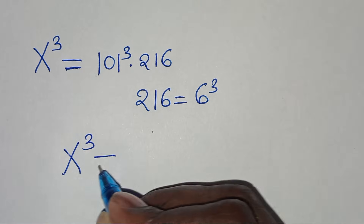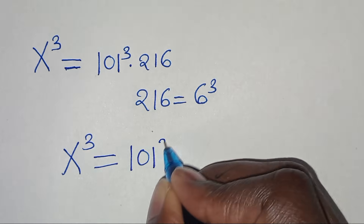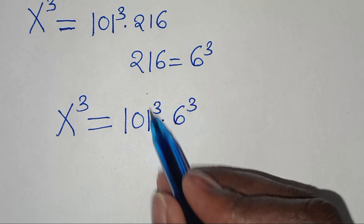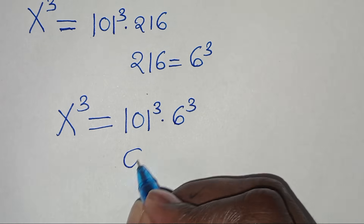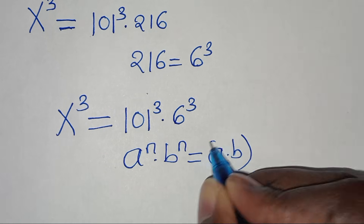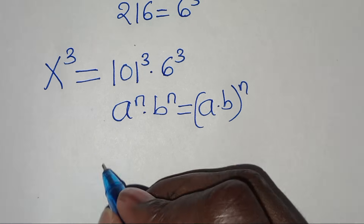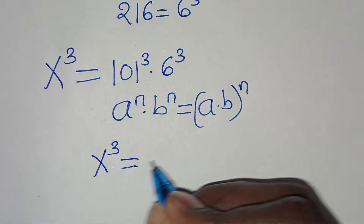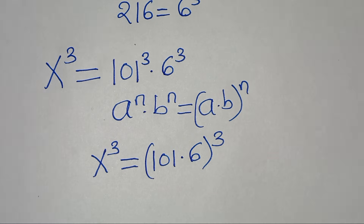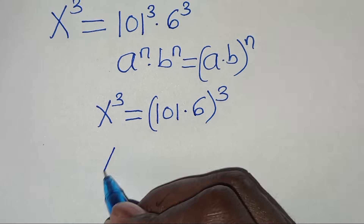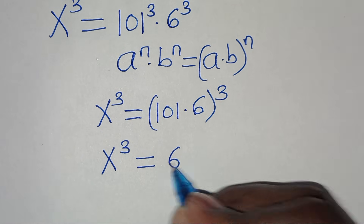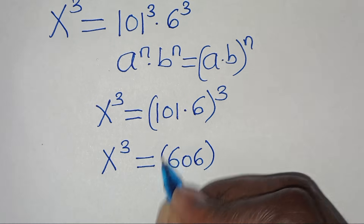So x to the power of 3 equals 11 to the power of 3 times 6 to the power of 3. Now 11 to the power of 3 times 6 to the power of 3 is in the form of a to the power of n times b to the power of n, which we can express as a times b raised to the power of n. So x to the power of 3 is equal to 11 times 6, raised to the power of 3, which is 66 raised to the power of 3.